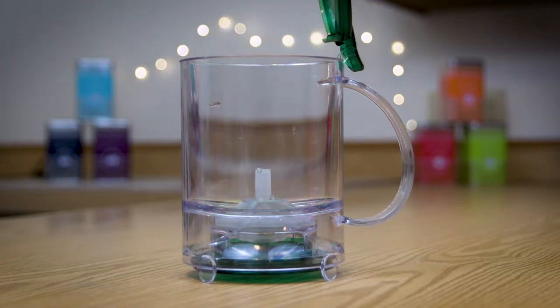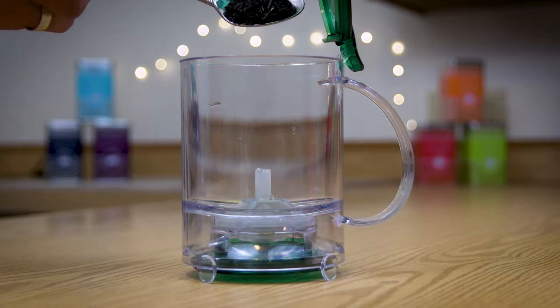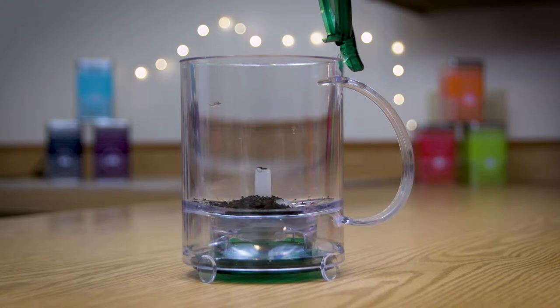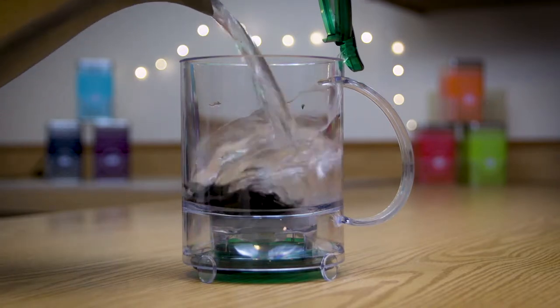To brew tea with the Teavana, all you have to do is add approximately one teaspoon of your favorite tea to the inside of the brewing chamber and then pour in freshly boiled water.